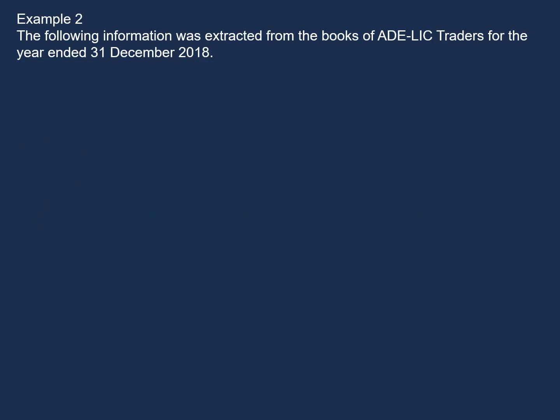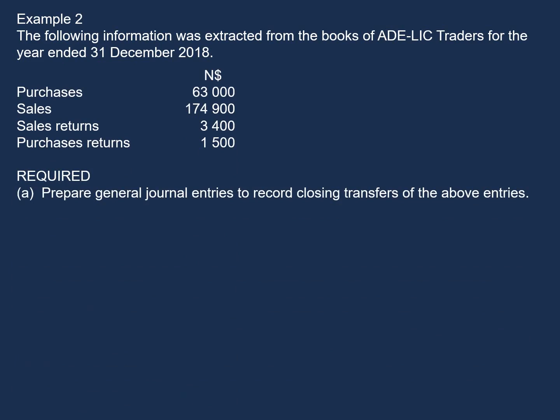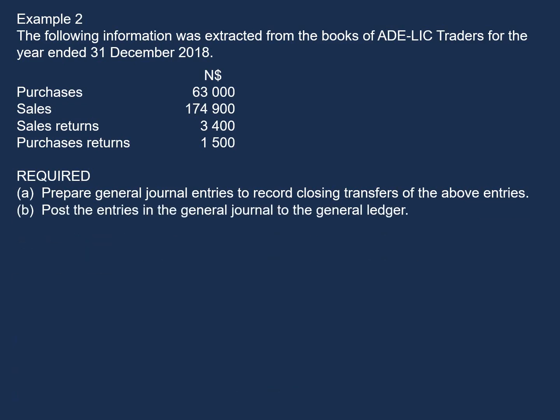Now let's have a look at a more detailed example. The following information was extracted from the books of Adelictratus for the year ended 31 December 2018. It's good practice to write down which side all of these accounts increase, or on which side all of these accounts appear on the trial balance. For purchases, it will appear on the debit side. Sales will appear on the credit side. For sales returns, it will appear on the debit side. And for purchases returns, it will appear on the credit side.